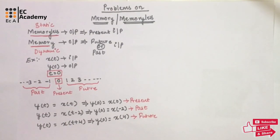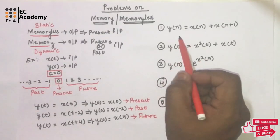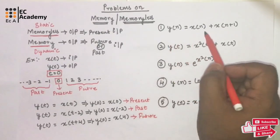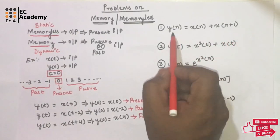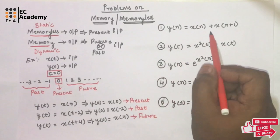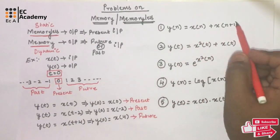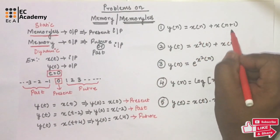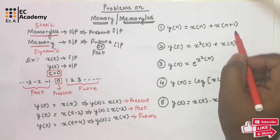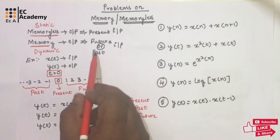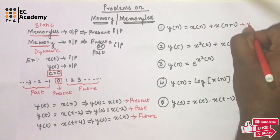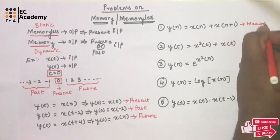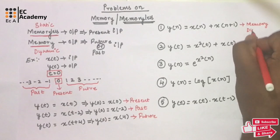Now let us solve some problems. Consider the first problem: y[n]=x[n]+x[n+1]. The output depends upon the present value of the input as well as the future value of the input. Therefore, we can say the system is having some memory, or the system is a dynamic system.